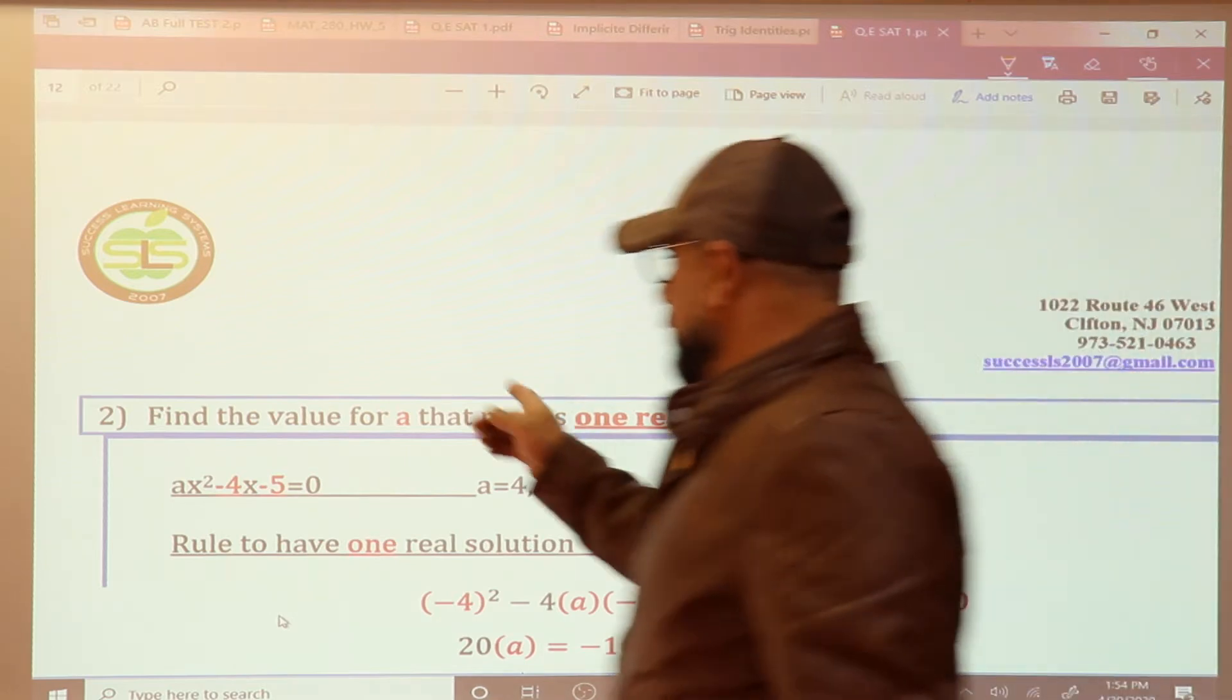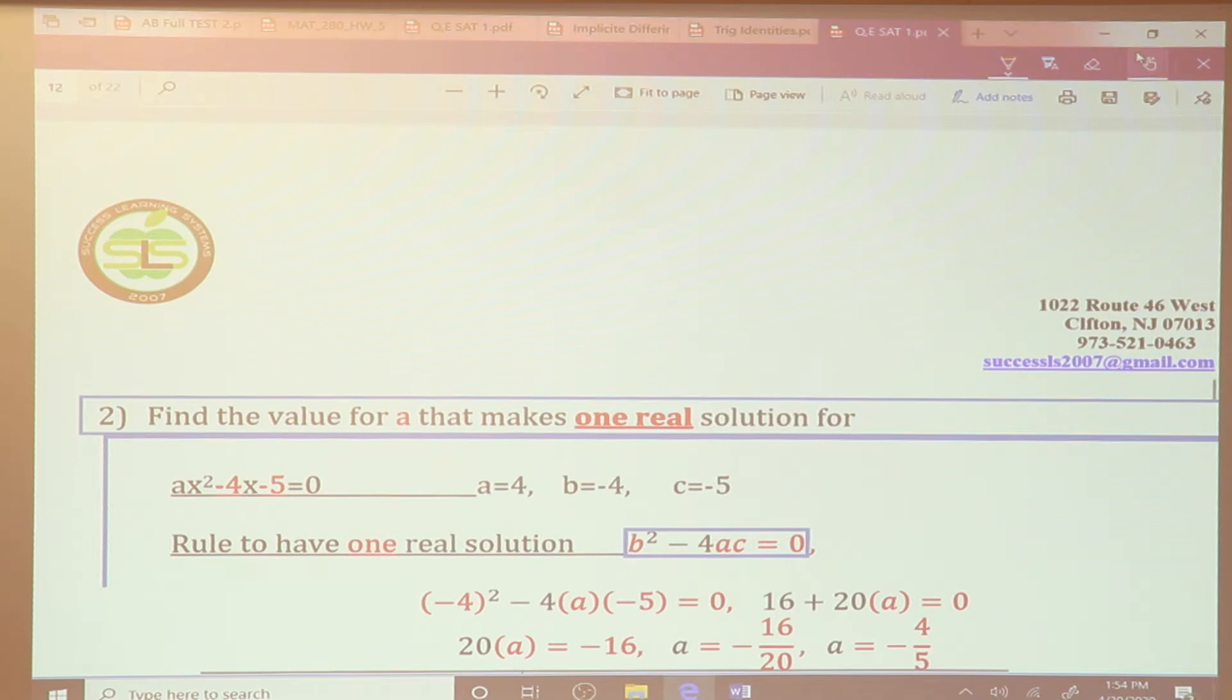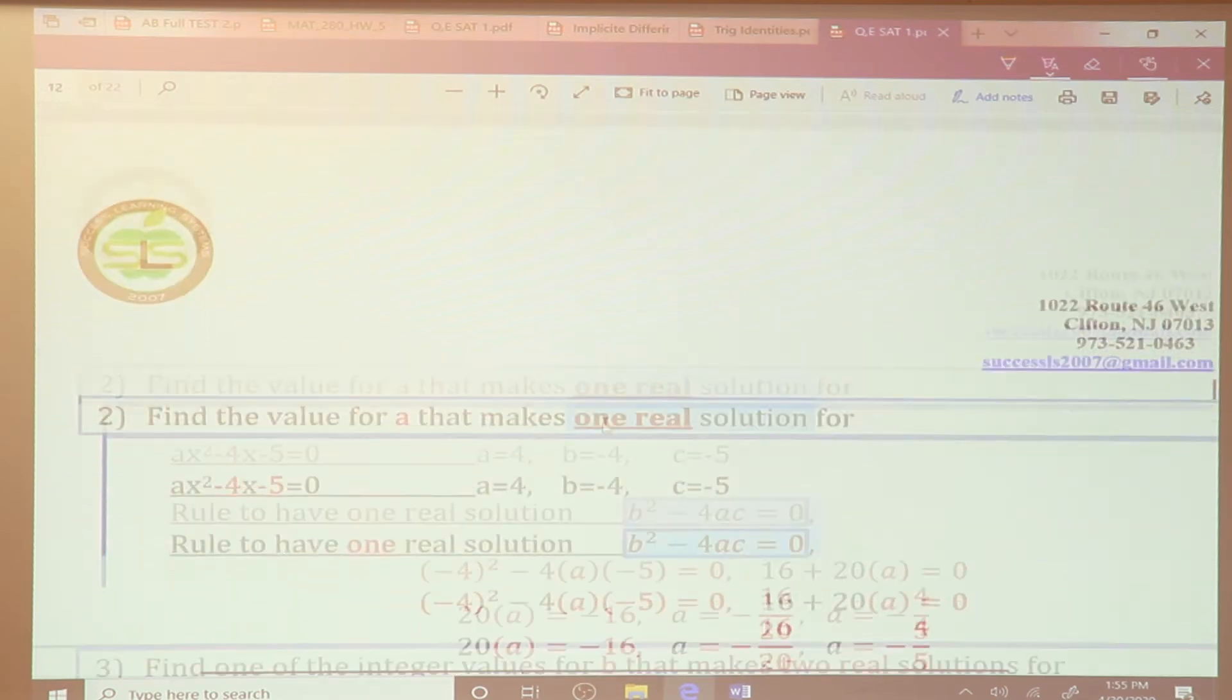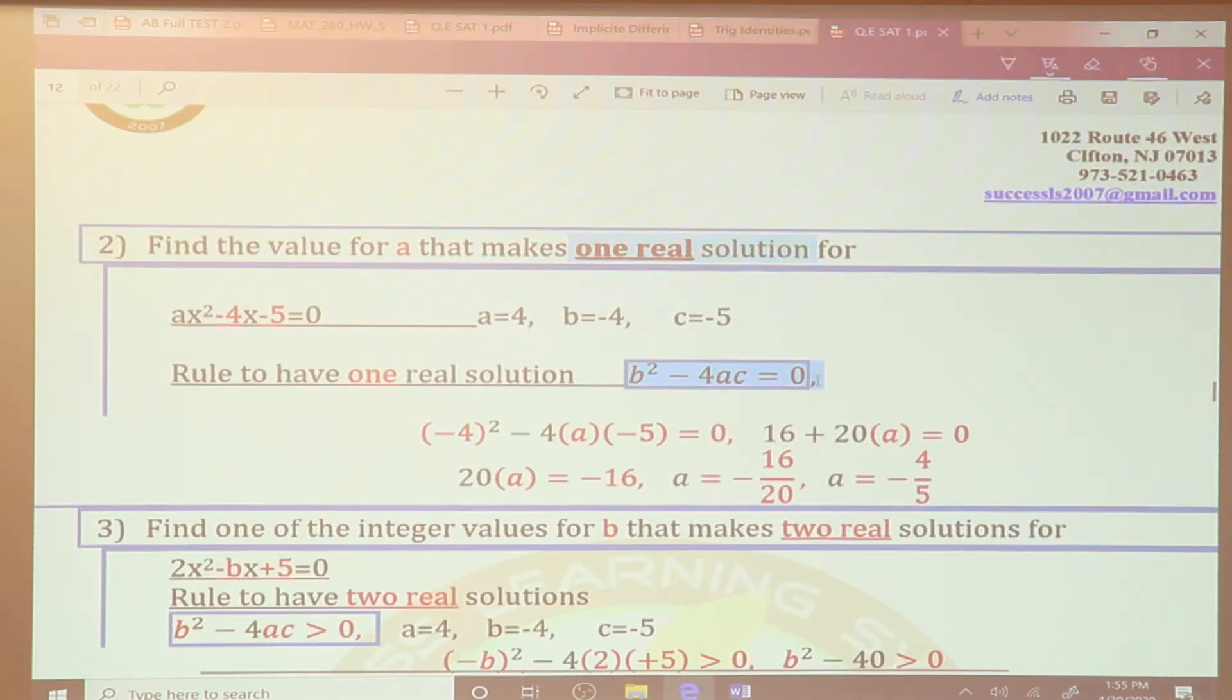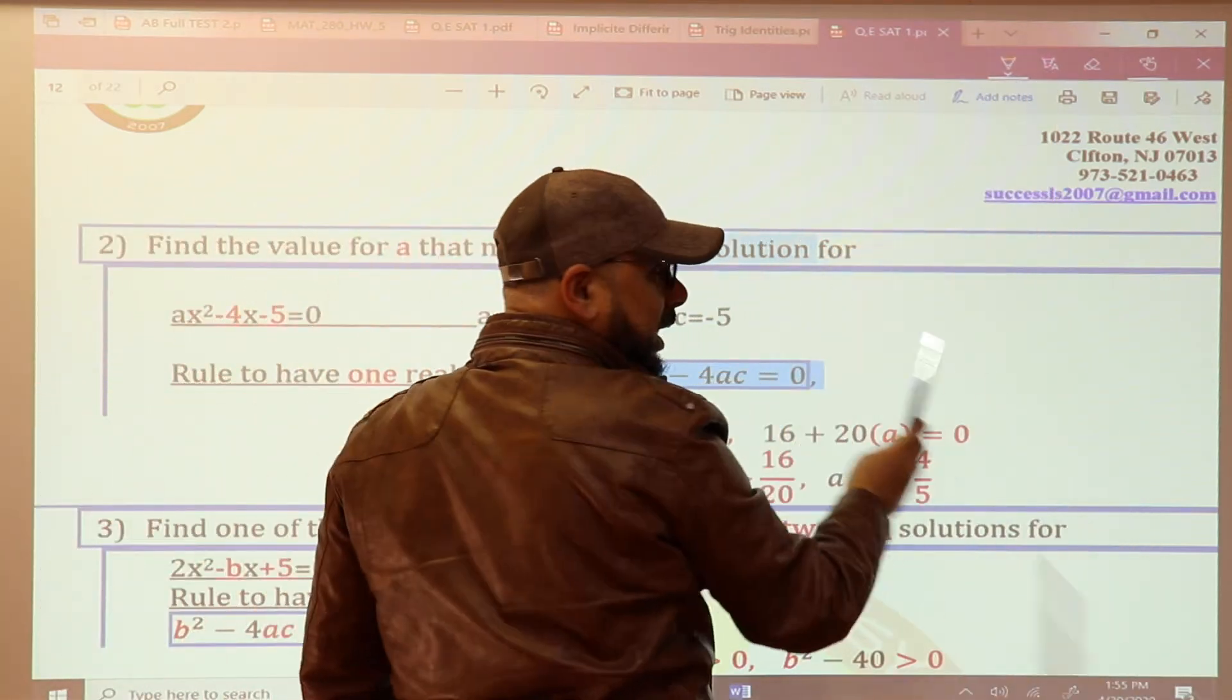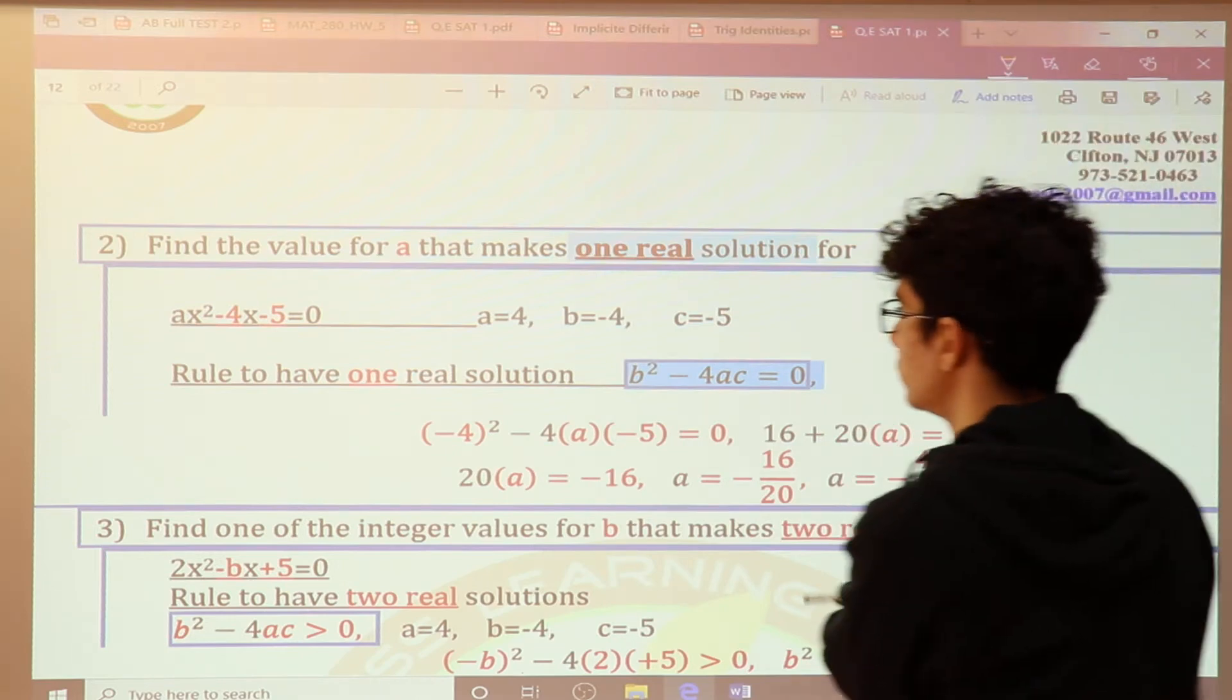Since you ask no real solution, you make it less than. Look here, we're using the same mindset, right? But since he said no real solution, we make it less than. When he said one real solution, we make it equal to 0, right? Now here, he said one solution. Apply the formula by itself: B squared minus 4AC. Go ahead, show me. Here, small handwriting, show me what you have to do.